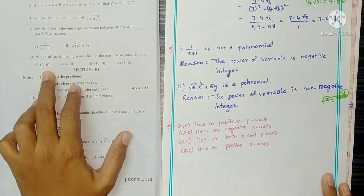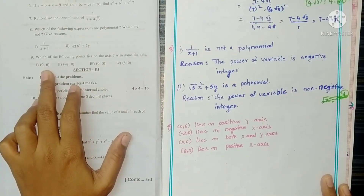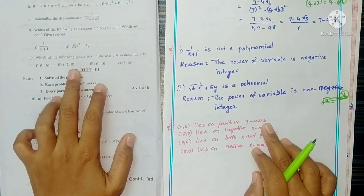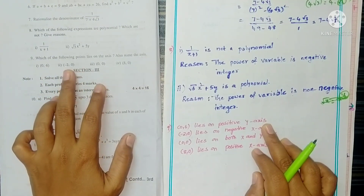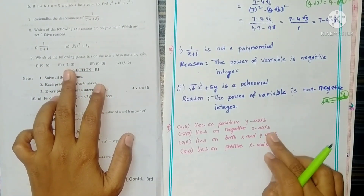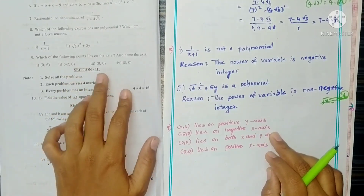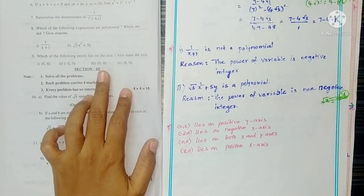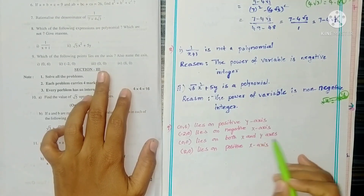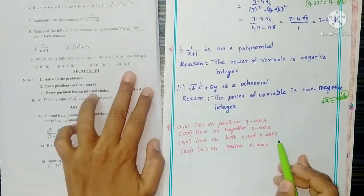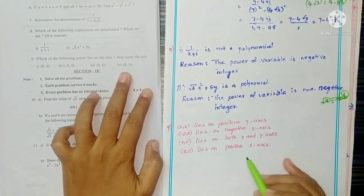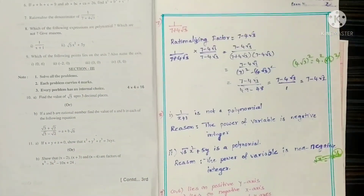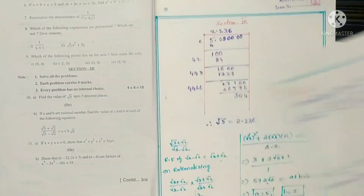Question 9: Which of the following points lies on an axis? If x = 0, the point lies on the y-axis. If y = 0, the point lies on the x-axis (negative side = negative x-axis). The origin (0,0) lies on both axes. If y = 0, the point lies on the x-axis.